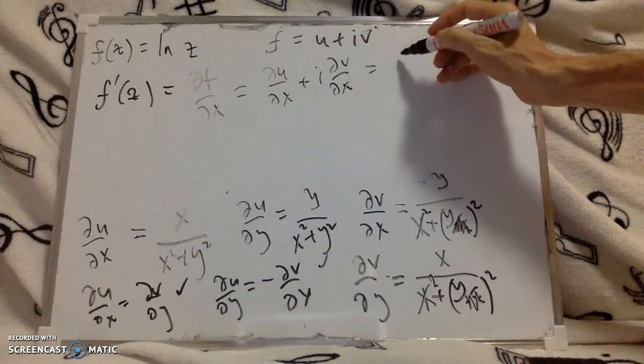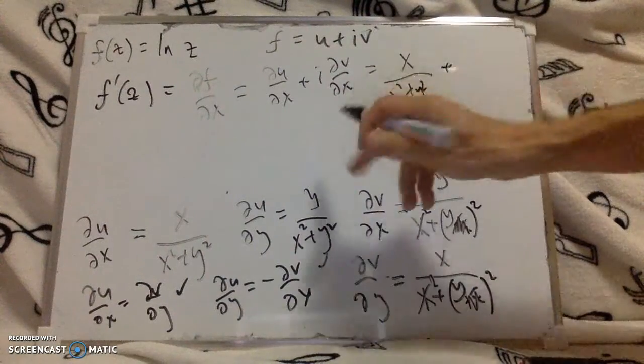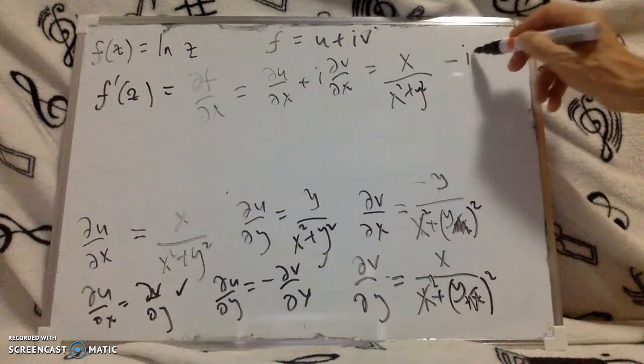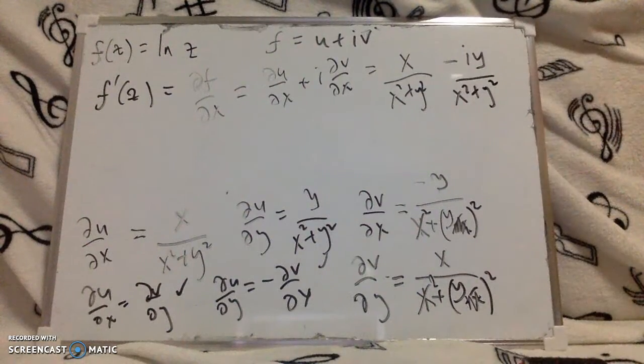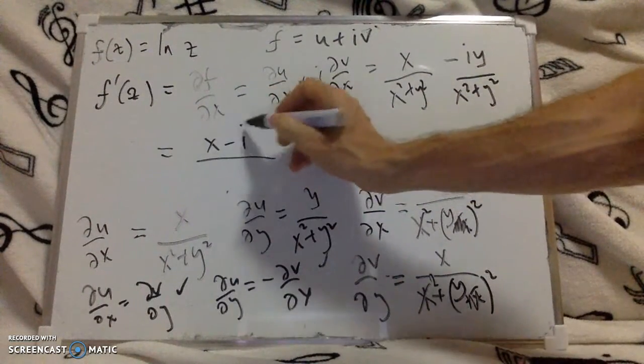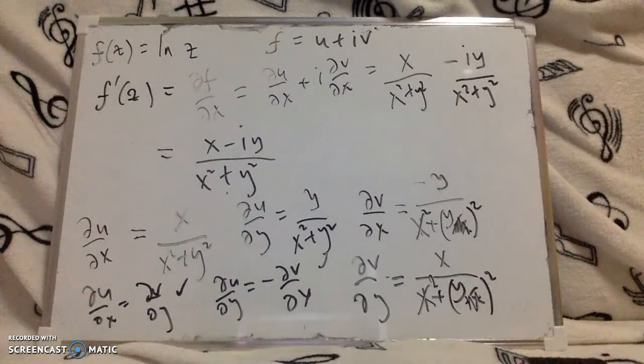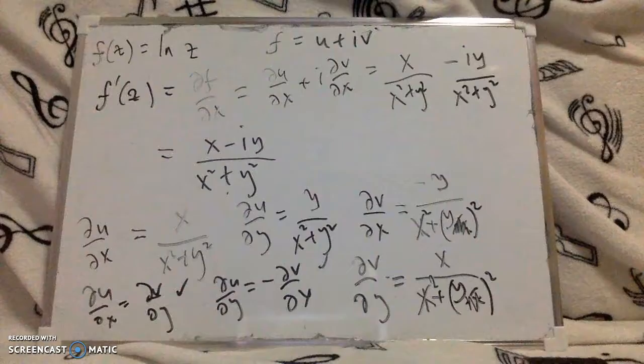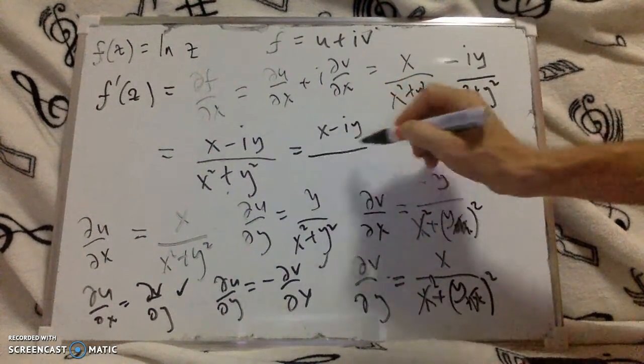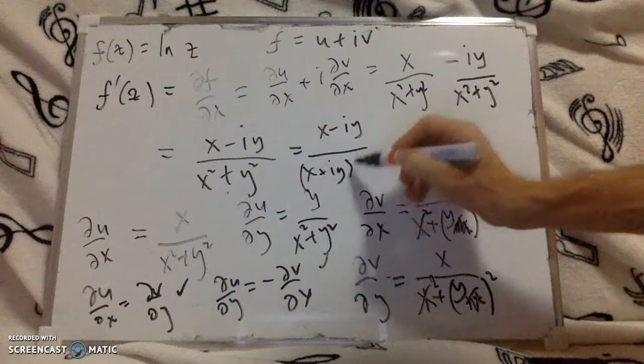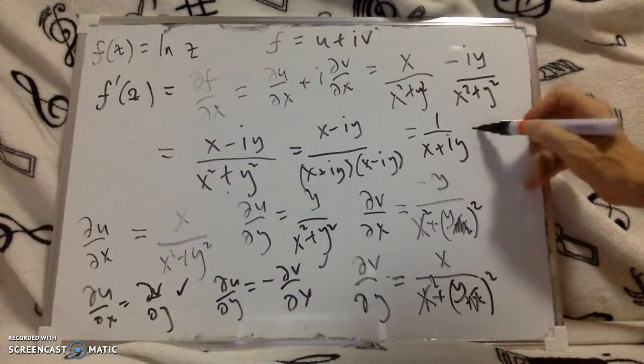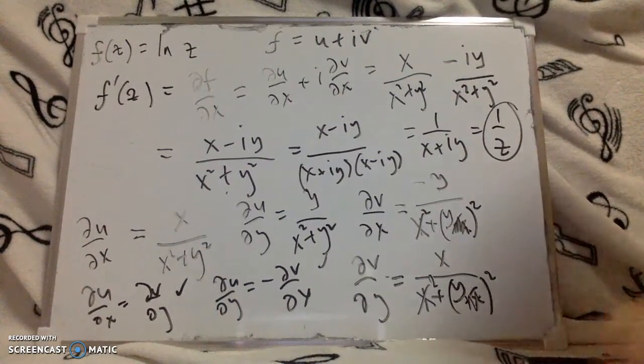And I just read off those values, so it's x over x squared plus y squared plus i times dv by dx which is here, so that's with a minus sign, so I've got minus iy over x squared plus y squared. We actually know what this should be, this actually helps us simplify, so we end up with x minus iy over x squared plus y squared. Now we know that this should be or expect it to be 1 over z. This doesn't immediately look like 1 over z until you realize of course that we can factor this into x plus iy and x minus iy, and then this and this cancel, we end up with 1 over x plus iy which is 1 over z, which is the answer we expect for the derivative of log z.